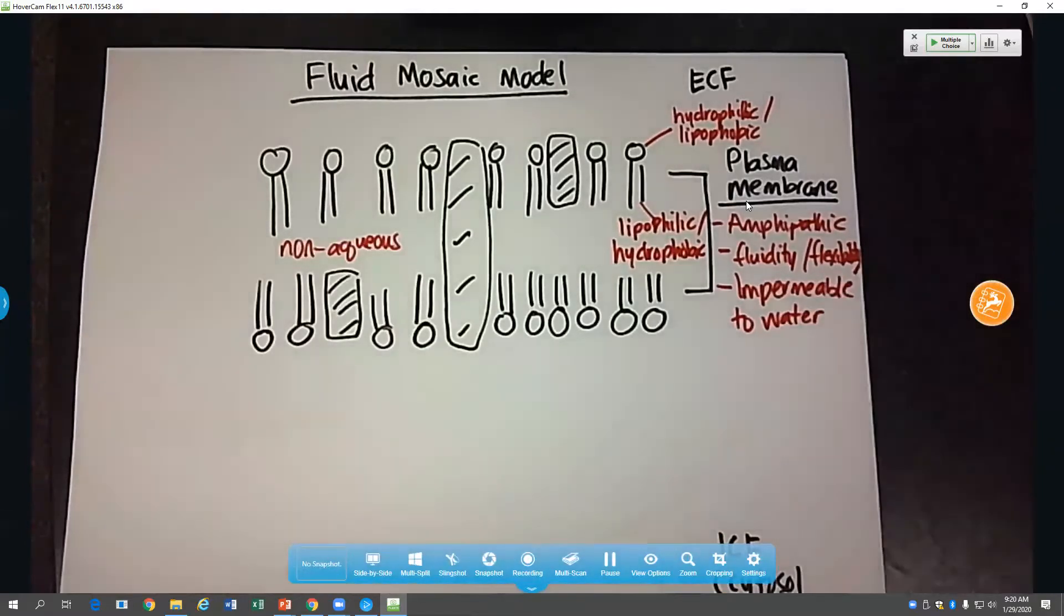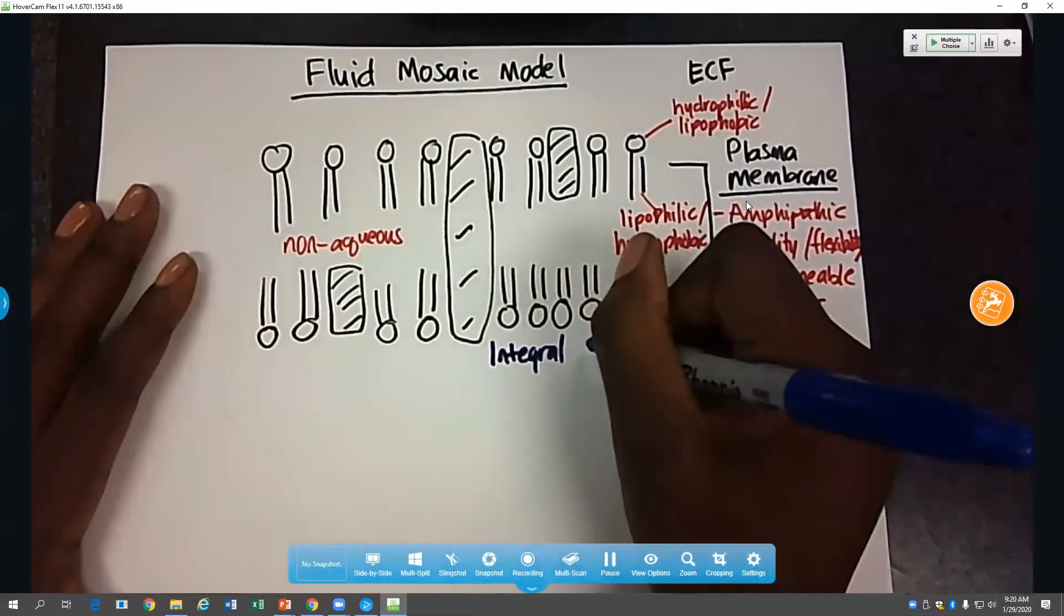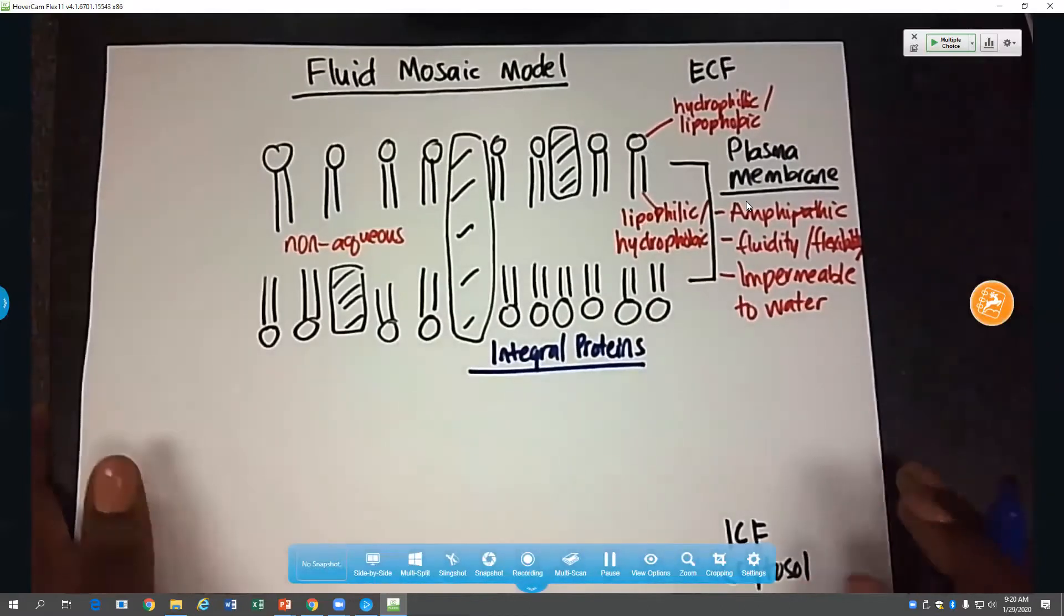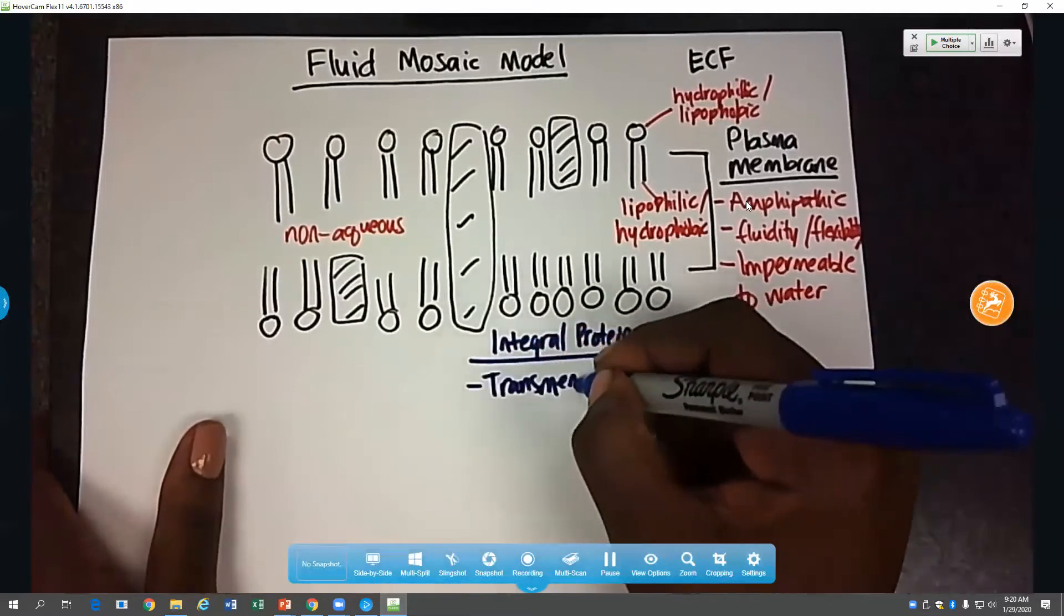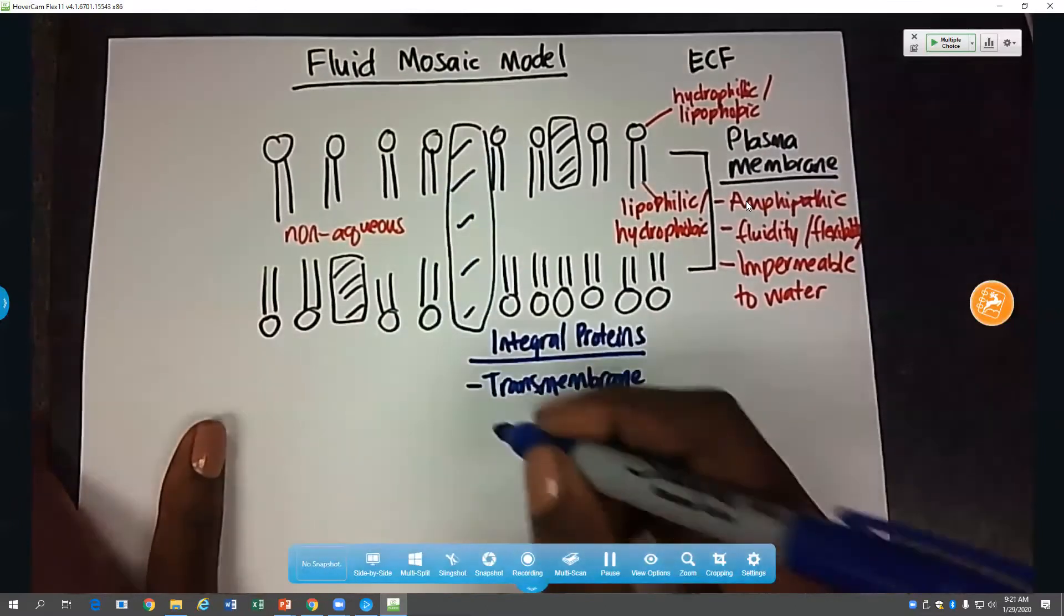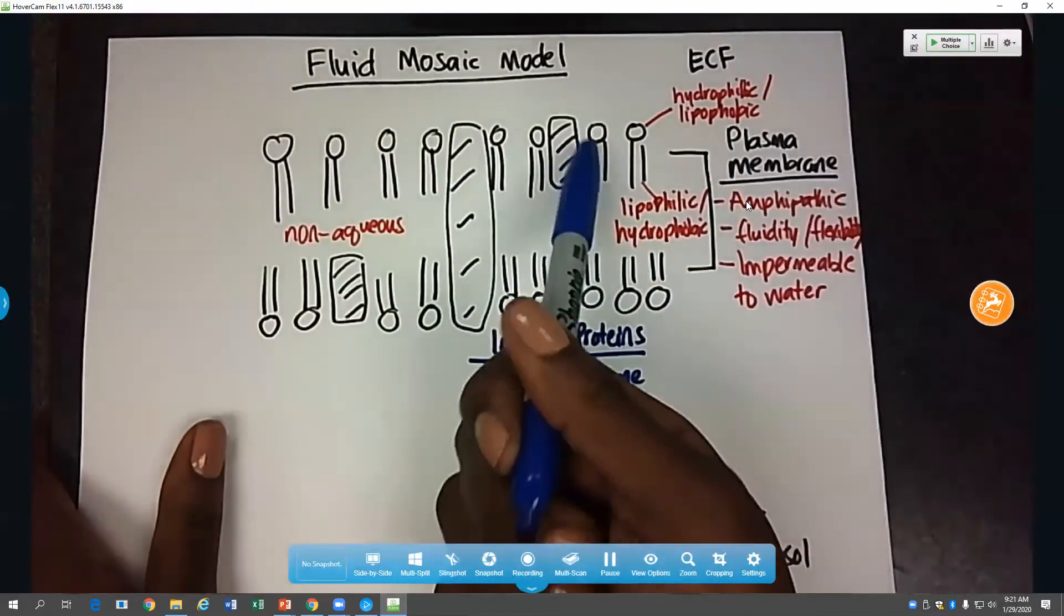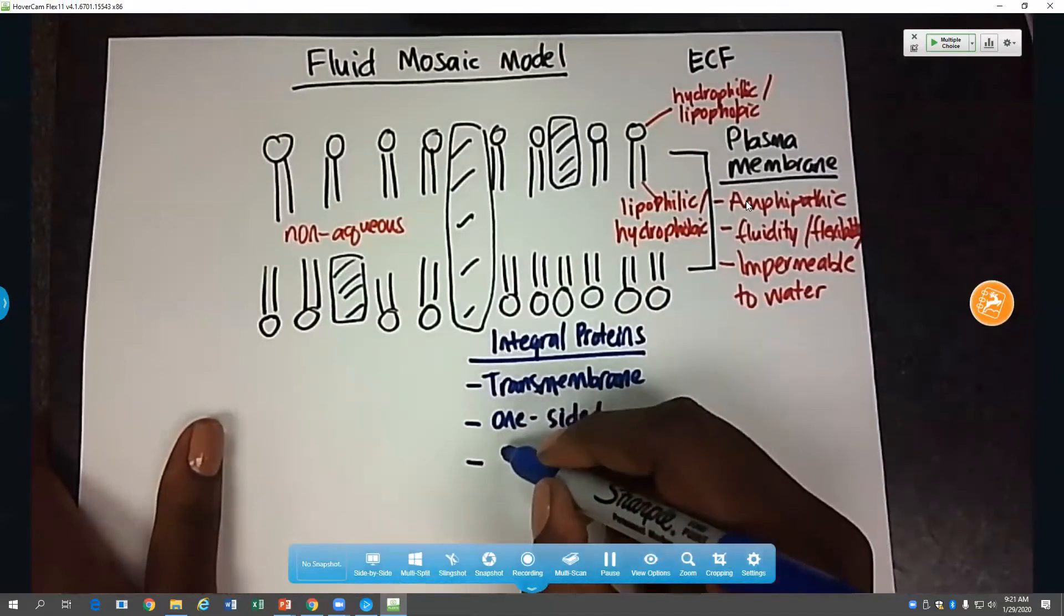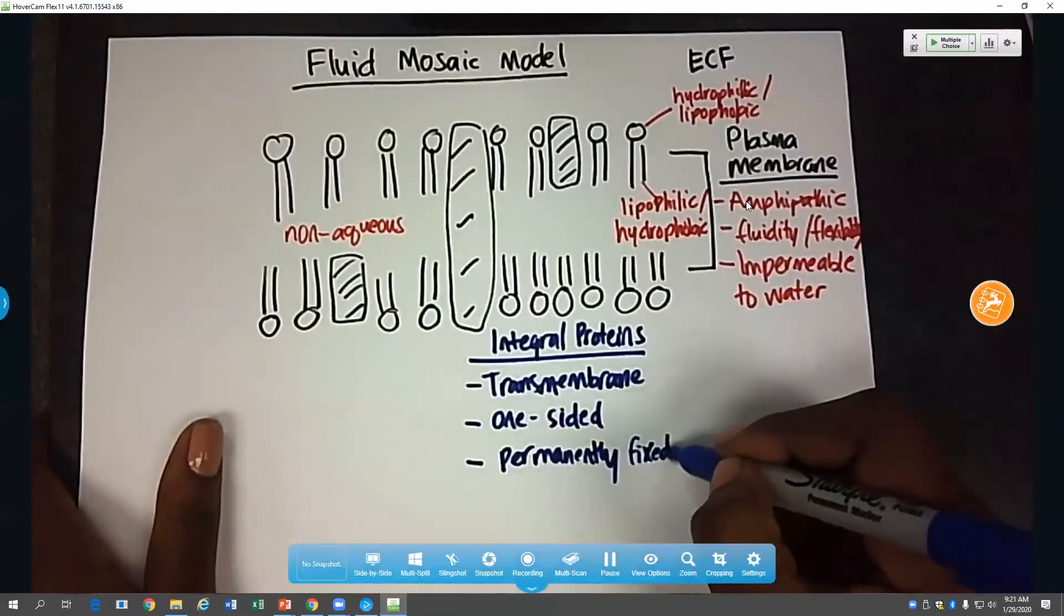Okay, let's describe some of our other structures that are present here. So we know that there are integral proteins. And integral proteins can be one of two types. They can be either transmembrane, such as this one here, meaning it spans the entire membrane, or they can be one-sided, such as this one, which is only located on one side of the membrane, or this one. These are usually fixed permanently to the membrane.